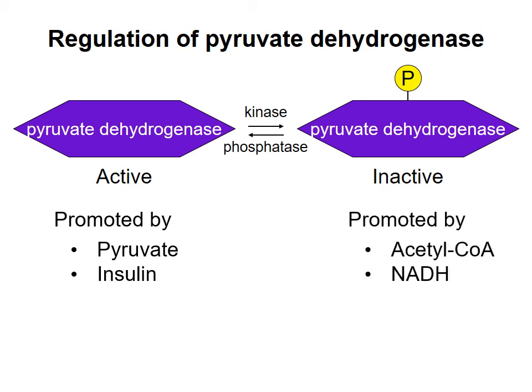Conversely, the products of the reaction, acetyl-CoA and NADH, are going to favour activity of the kinase and phosphorylate this enzyme to inactivate it, because when you have a lot of products building up, that's not a good time to carry out the reaction. Keep in mind that the effects of these compounds are not necessarily direct on the kinase or phosphatase, but there's going to be some sort of a signal cascade that's probably indirect to accomplish phosphorylation or dephosphorylation of the enzyme.